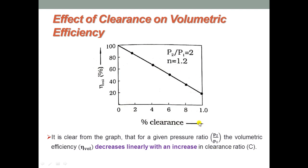Observing the diagram, for a pressure ratio P2/P1 equal to 2 and polytropic index n equal to 1.2, as the volumetric efficiency increases the clearance ratio linearly decreases. Conversely, as the volumetric efficiency decreases, the clearance ratio increases. This is the observation regarding the effect of clearance on volumetric efficiency.